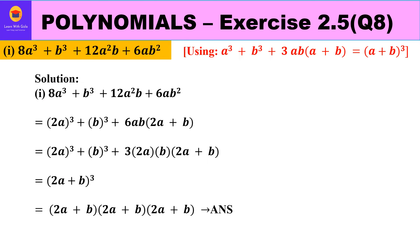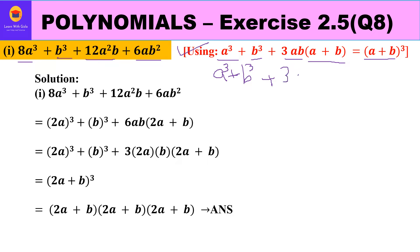In the first part we have to factorize 8a³ + b³ + 12a²b + 6ab². This clearly matches our identity (a+b)³, because (a+b)³ expands to a³ + b³ + 3ab(a+b), which opens as a³ + b³ + 3a²b + 3ab². If you observe, this exactly matches the question: 12a²b and 6ab².